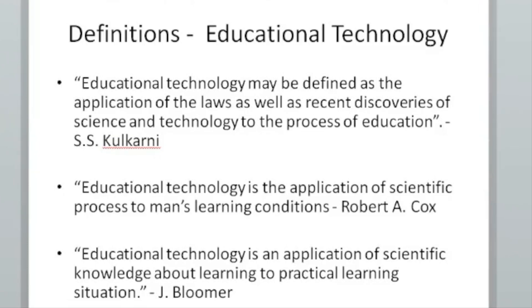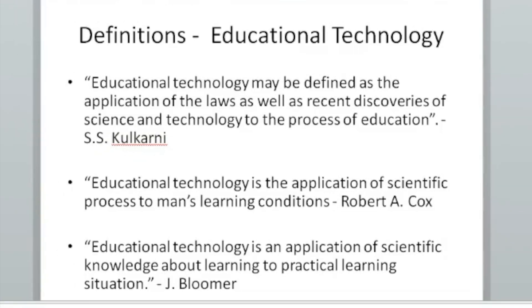First, we discuss the definition by Kulkarni. Next, Robert's definition of educational technology is the application of scientific process to man's learning conditions. This is an understanding of educational technology in the classroom, where speculative technology has been available in the classroom environment — the learning conditions and the scientific process in the application of educational technology.